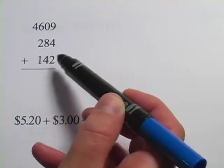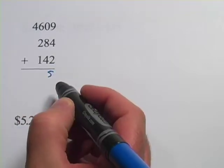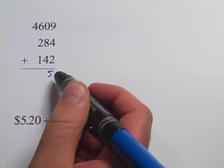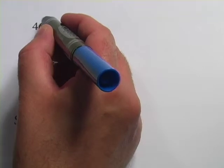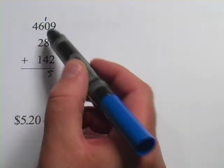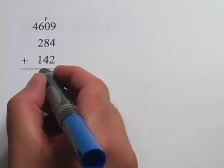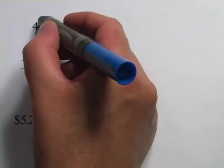9 plus 4 is 13 plus 2 is 15. The 5 is in the ones column. That 1 from the 15 is in the tens column, so we move it up here to the next column over. And now we start the whole process again. 1 plus 8 is 9 plus 4 is 13. We put down the 3. We carry the 1.